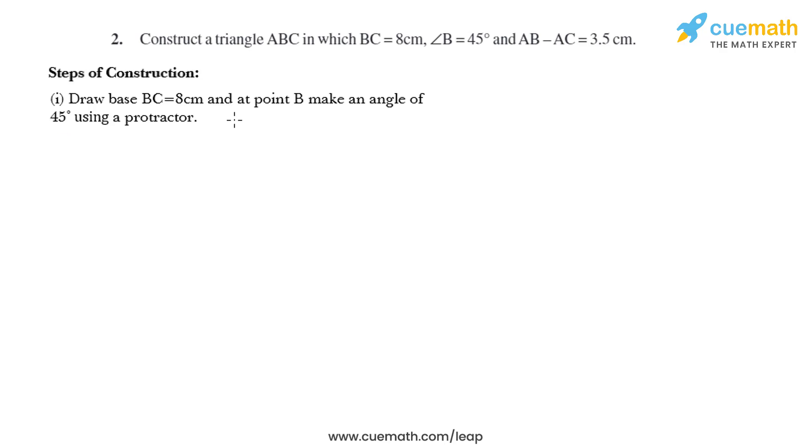Draw base BC equal to 8 centimeters and at point B make an angle of 45 degrees using a protractor. First we'll draw base BC. That is B and that is C, and that is 8 centimeters. Using a protractor we have to make an angle of 45 degrees.